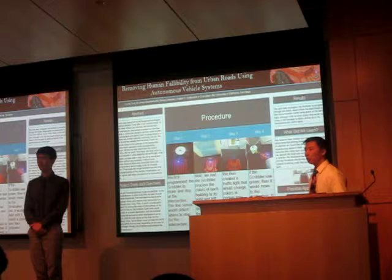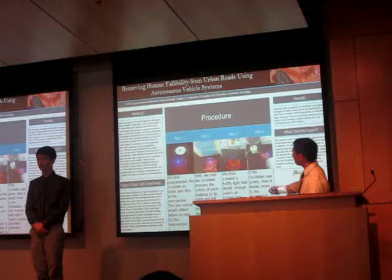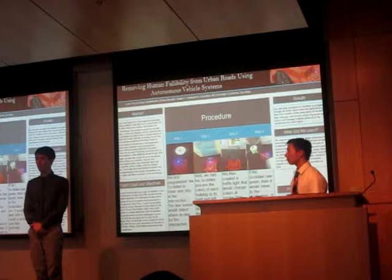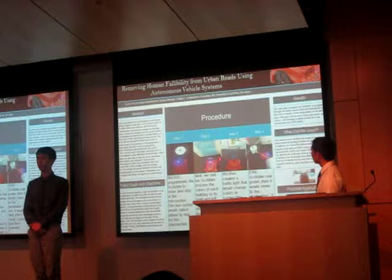There are four main objectives for our goal. The first is to have the scribbler move towards the intersection, represented by the CD right here. The scribbler will stop once it is directly over the CD. Once it stops, it will turn right and turn left, and then check the color of the buildings to its right and to its left to determine which way it has to go.